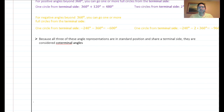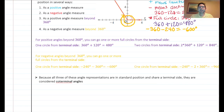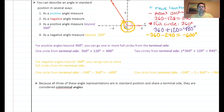All these angle representations are in standard form and share a terminal side, so we call them coterminal angles. If asked for a coterminal angle to 120 degrees, examples include negative 240, negative 600, negative 960, or 480 degrees — they all represent the same terminal position.